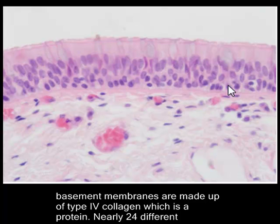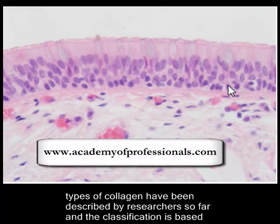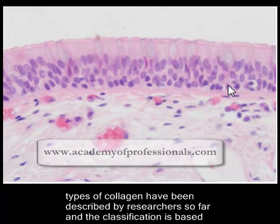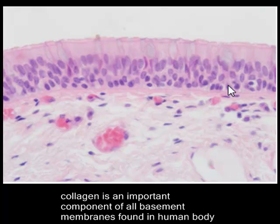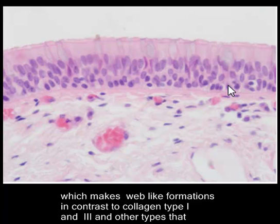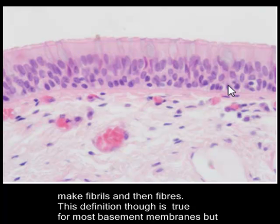Basement membranes are made up of type 4 collagen, which is a protein. Nearly 24 different types of collagen have been described by researchers so far, and the number is increasing. The classification is based upon shape, physical properties, and amino acid composition. Type 4 collagen is an important component of all basement membranes found in the human body and makes web-like formations, in contrast to type 1, type 3, and other types that make fibrils and then fibers.